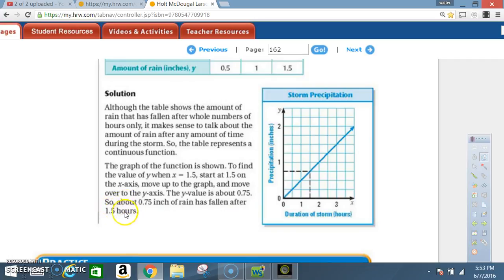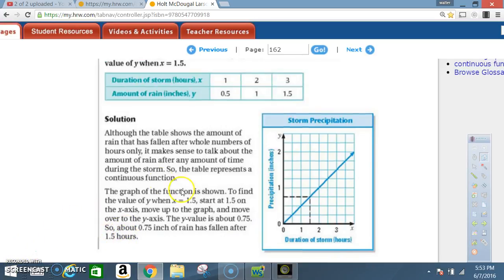All they're saying is plot these points on your graph, extend the line up because it's continuous—you're talking about the amount of rainfall, and the amount of rainfall can be represented by whole numbers and by decimals.